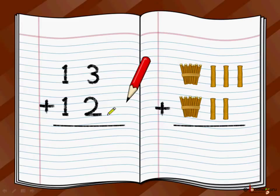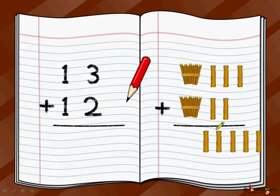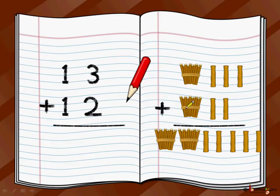So how many sticks do we have? To count this, let's do it first in a pictorial way. We start from the individual sticks — the ones position, which is on the right side. So how many loose sticks do we have? We have 1, 2, 3, 4, 5. And how many bundles? One bundle, two bundles.